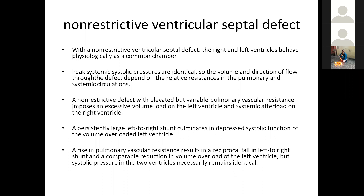With non-restrictive defects, the right and left ventricles behave physiologically as a common chamber. Peak systolic pressures are identical, so the volume and direction of flow through the defect depends on the relative resistance of the pulmonary and systemic circulations. Non-restrictive defects with elevated but variable pulmonary vascular resistance pose an excessive volume load on the left ventricle and a pressure load on the right ventricle. Consistently large left-to-right shunt culminates in depressed systolic function of the volume-overloaded LV. Rise in pulmonary vascular resistance results in a reciprocal fall in the left-to-right shunt and a comparable reduction in LV volume overload, but systolic pressure in both ventricles necessarily remains the same.